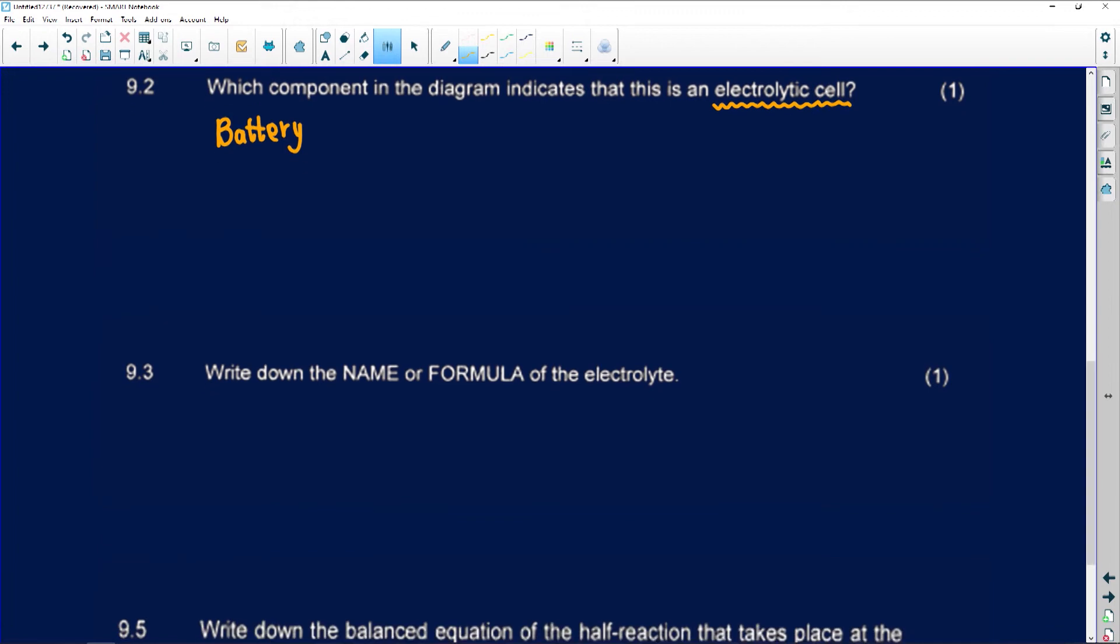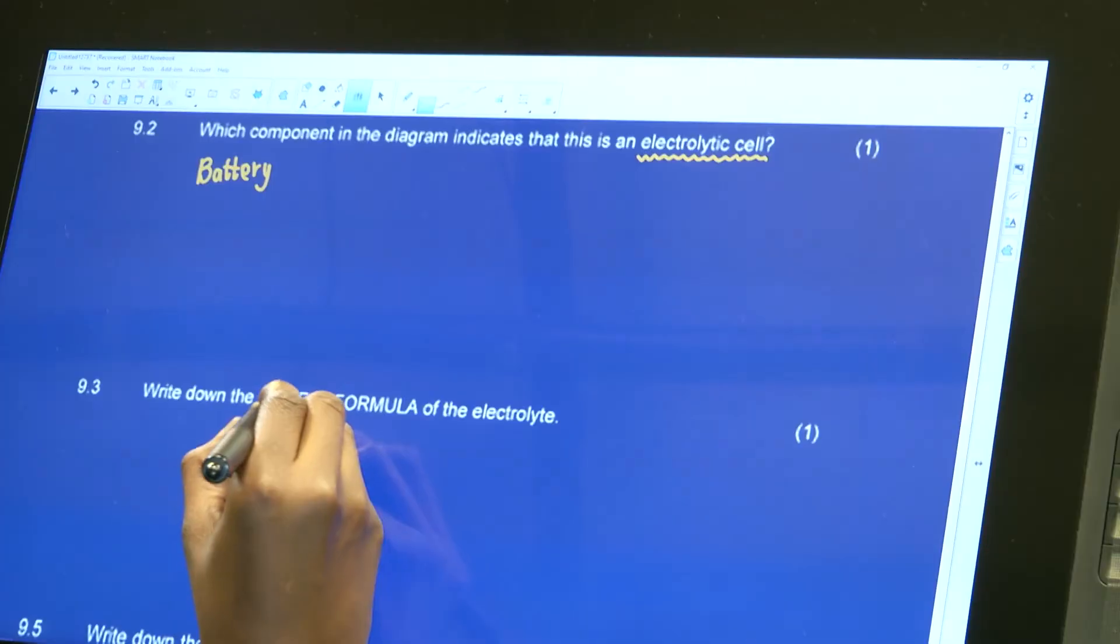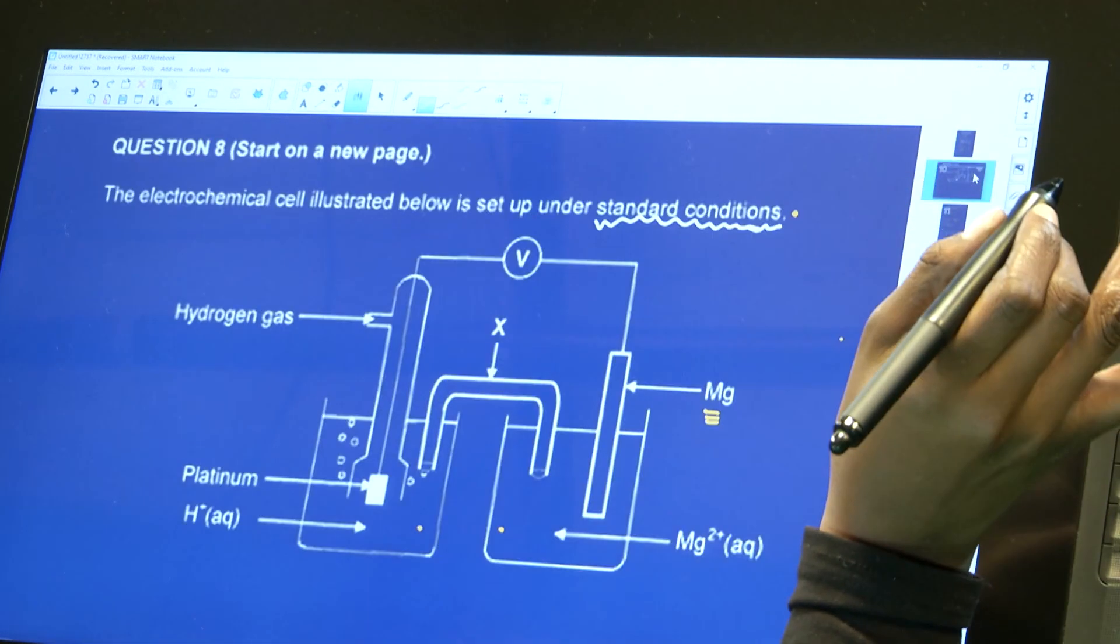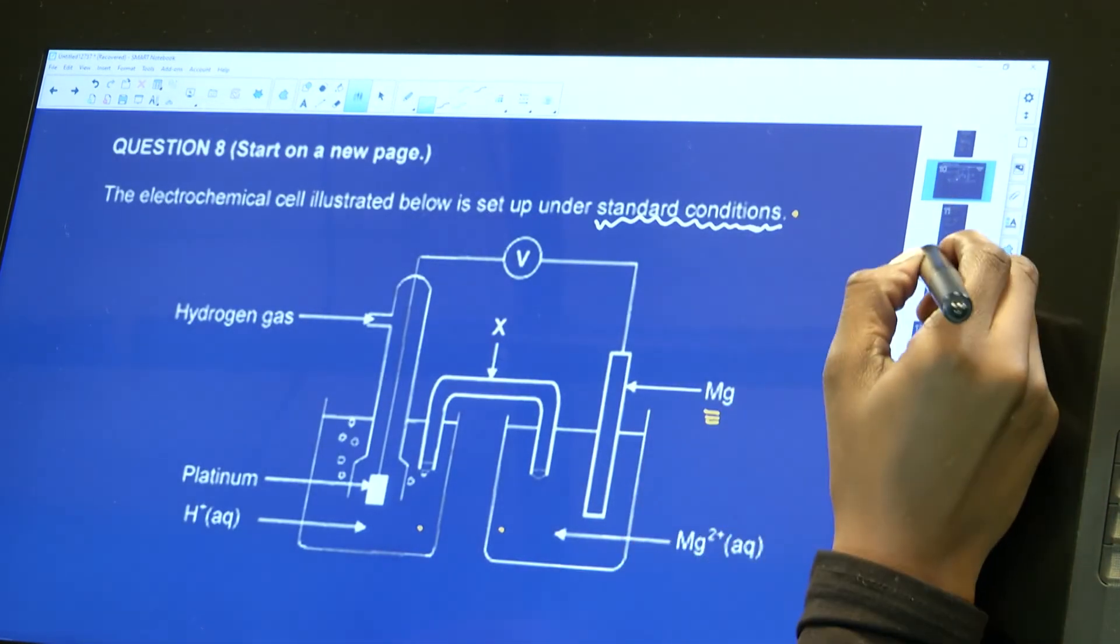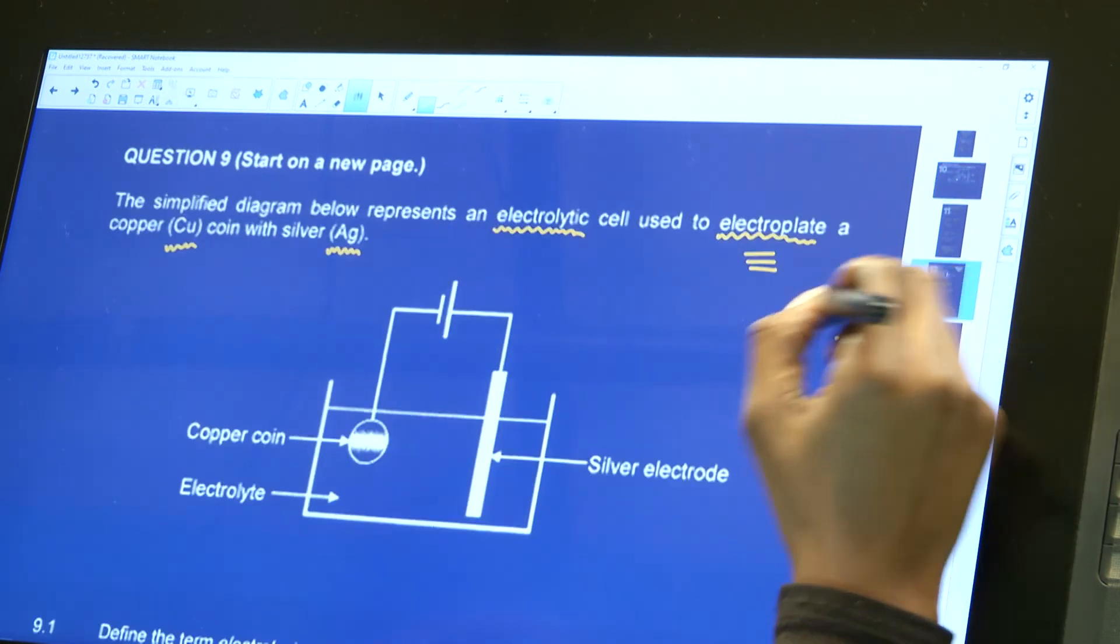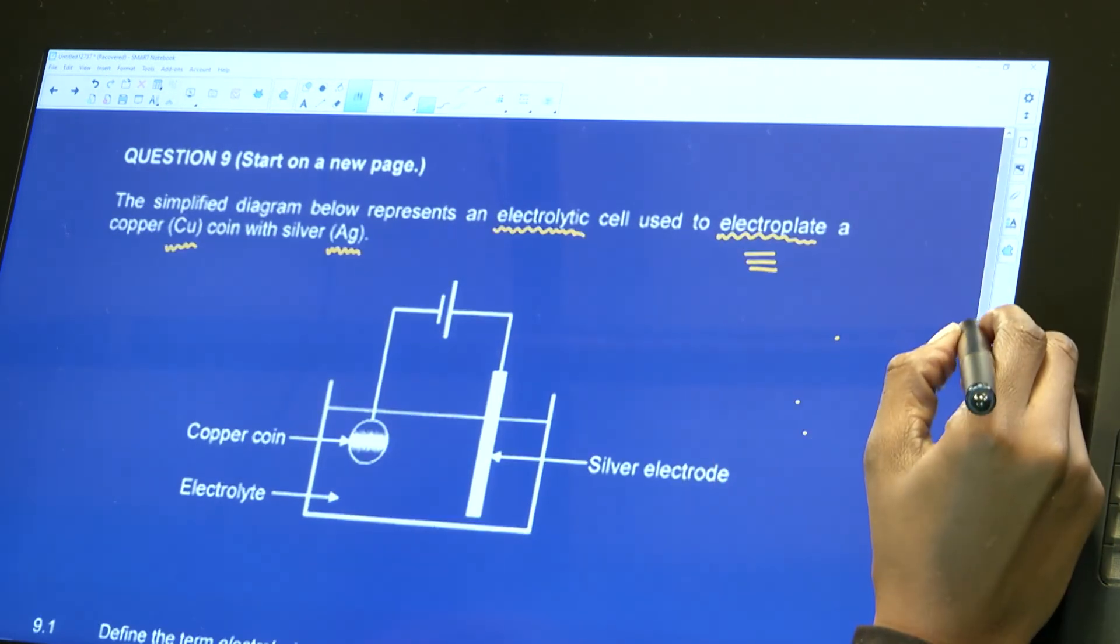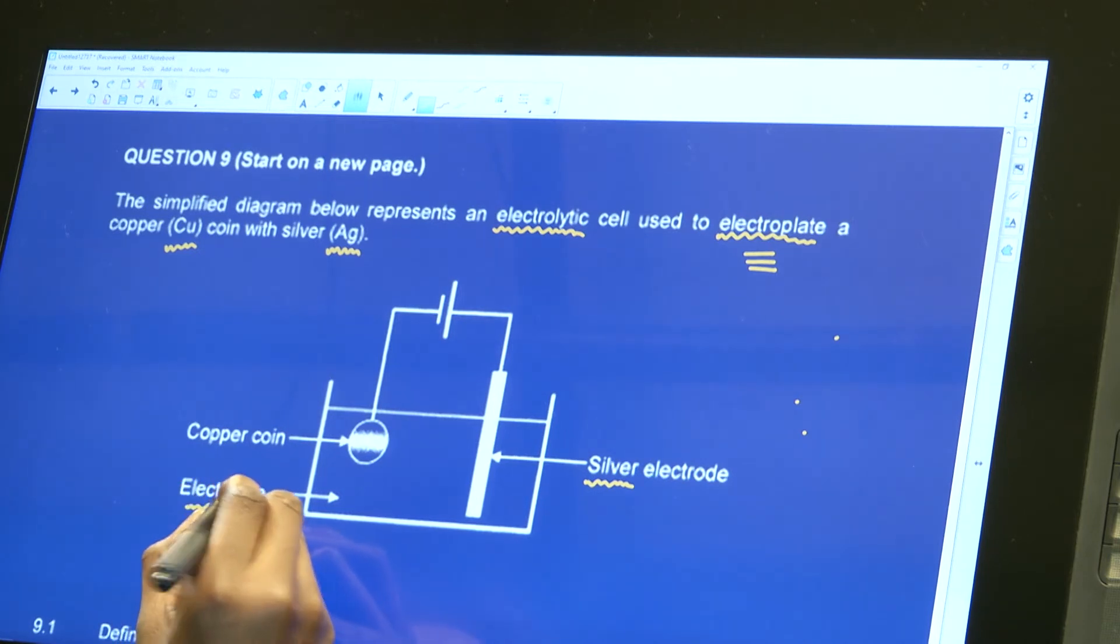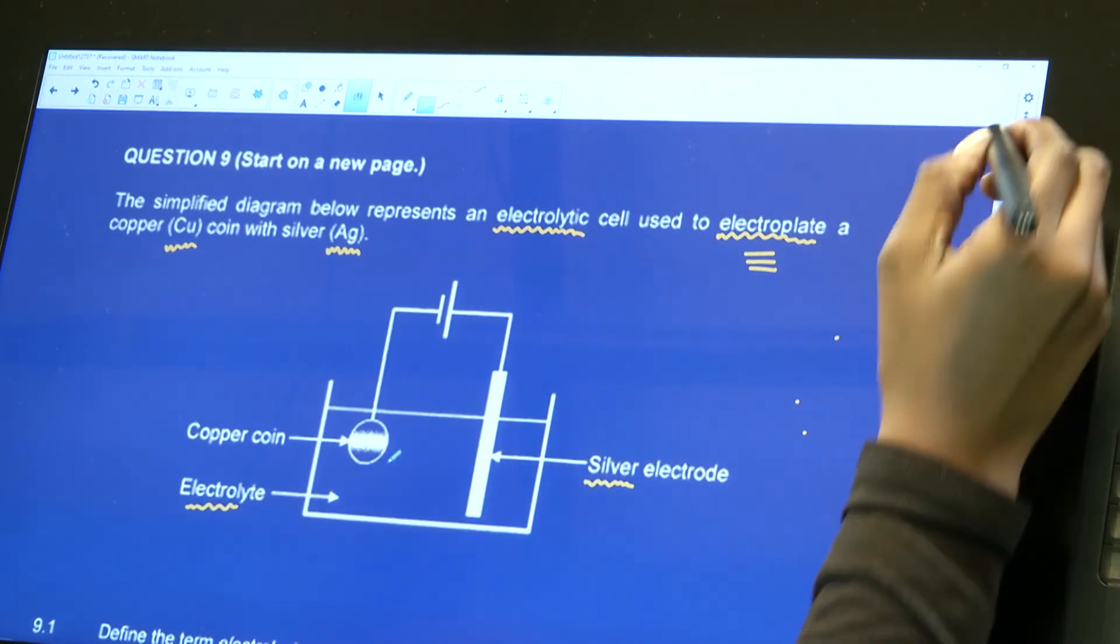Number 9.3 says we must write down the name or formula of the electrolyte. Electrolyte is just a fancy way of saying solution. I can see that the electrolyte that will be present is silver, so that will be silver nitrate.